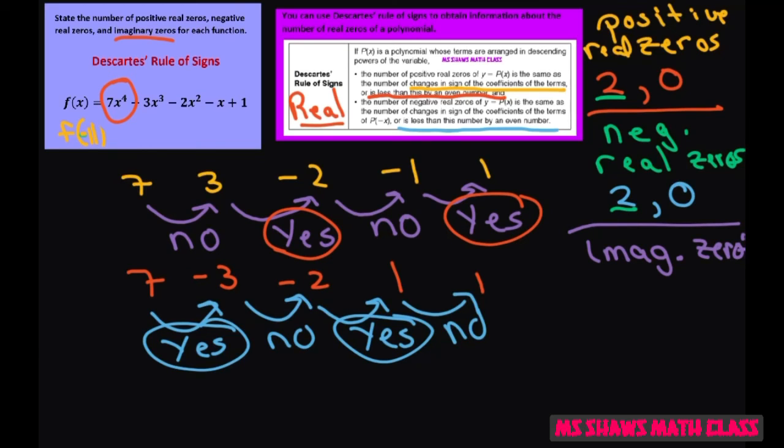That means if you have 2 positive and 2 real, that means you have 0 imaginary. If you have 2 positive and 0 negative, or if you have 0 reals and 2 negative, you would still have 2 imaginaries.